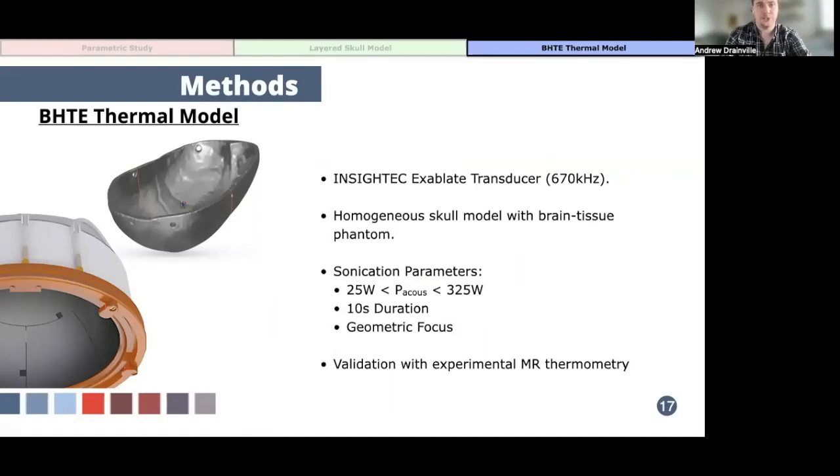After examining the effects of shear wave mode conversion and internal reflection in the layered skull model, we wanted to then use acoustic simulations with our numerical thermal model to estimate temperature rise at the focus. So for our thermal modeling, we considered a homogeneous skull model using skull model 2 filled with a brain tissue phantom material. The temperature field is simulated for acoustic powers ranging from 25 to 325 watts with 10-second sonications at the geometric focus of the transducer, and then we compared simulation results with experimental MR thermometry.